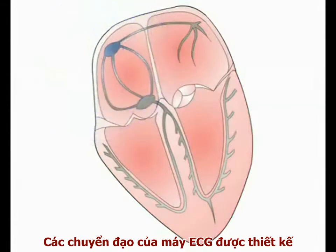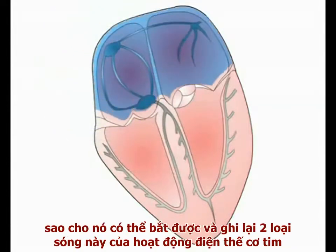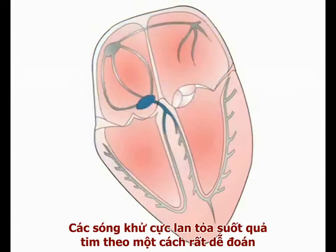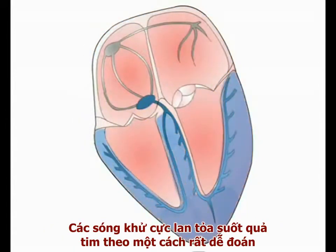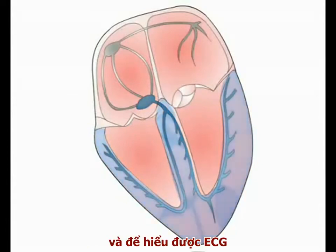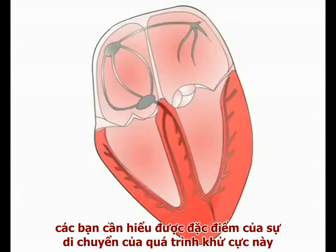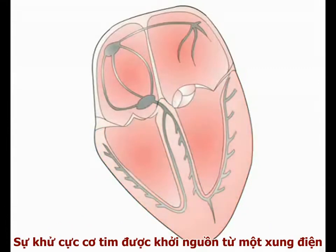The leads of the ECG machine are designed to detect and record these two waves of cardiac electrical activity. The depolarisation wave spreads through the heart in a highly predictable pattern, and to understand the ECG readout, the pattern of spread of cardiac depolarisation needs to be understood.